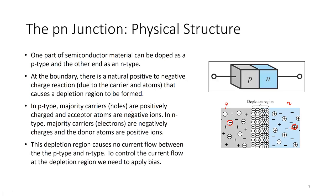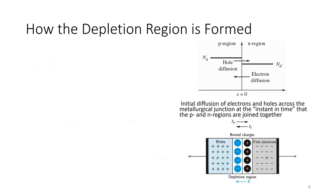This depletion region causes no current flow between P-type and N-type. It doesn't allow holes from the P-side to cross to the N-side. The concept of diffusion says that a concentration gradient would cause charges to flow to the other side, but the depletion region opposes it. It does not allow current flow between P-type and N-type unless you apply a certain voltage across the depletion region.